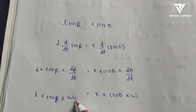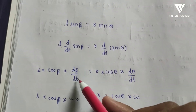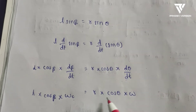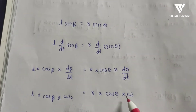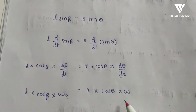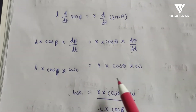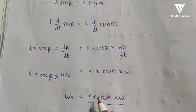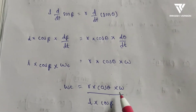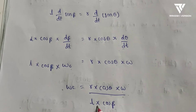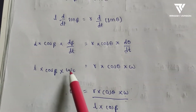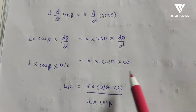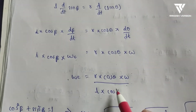From this, ω_c = (R·cos θ·ω) / (L·cos β). We know the values of all terms except cos β, so we need to find cos β separately.